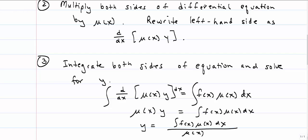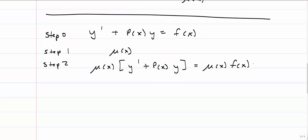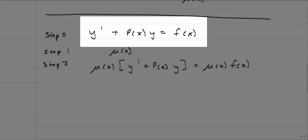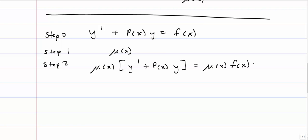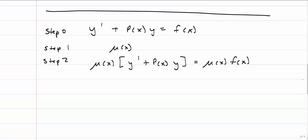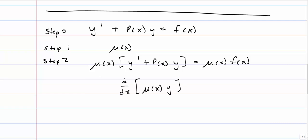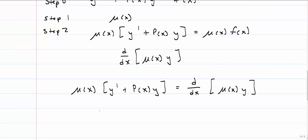The question is: how can we find a mu(x) such that we can rewrite the left-hand side as that simple derivative? Going through the general equation with the differential equation in standard form, if we multiply both sides by mu(x) and want the left-hand side to equal a single derivative, we set up an equation. On the left-hand side we use the distributive property, and on the right-hand side we use the product rule — since y is also a function of x — and the derivative of the right-hand side works out accordingly.